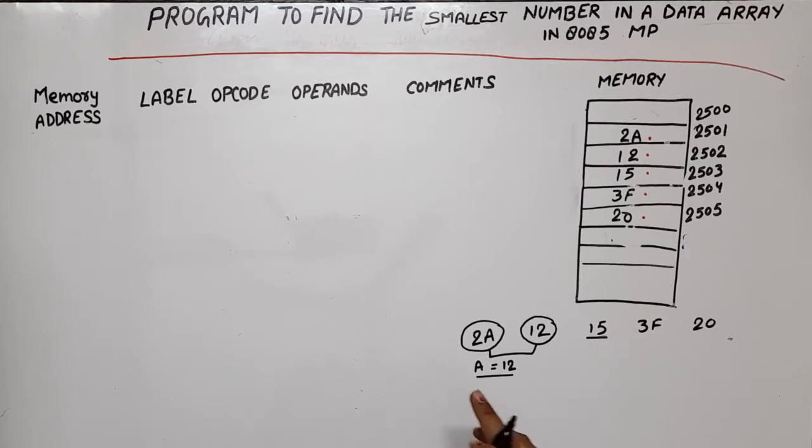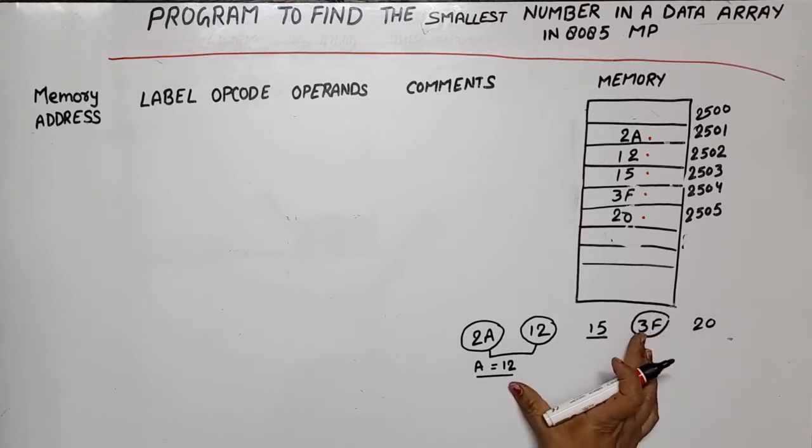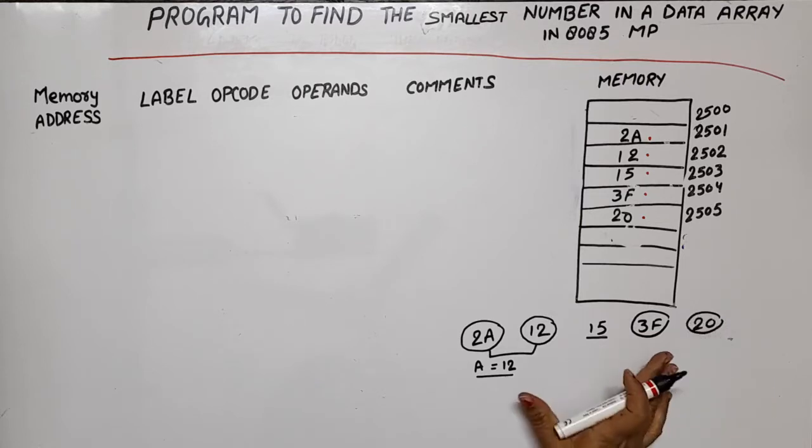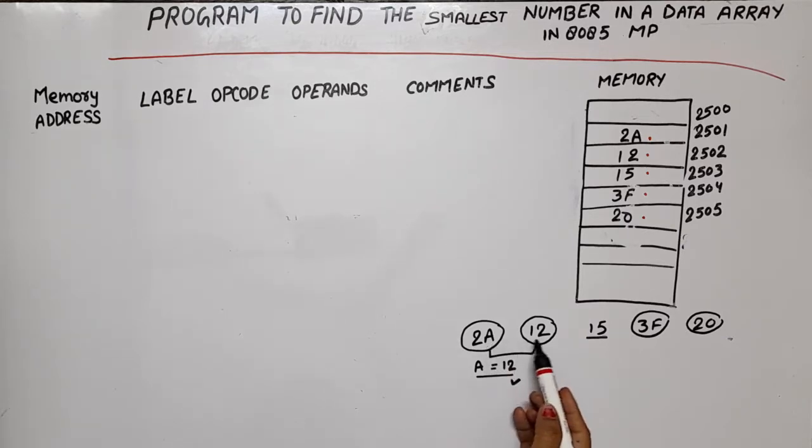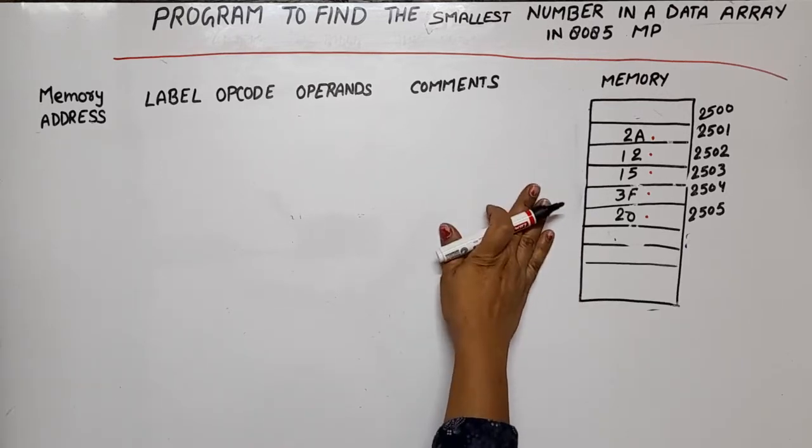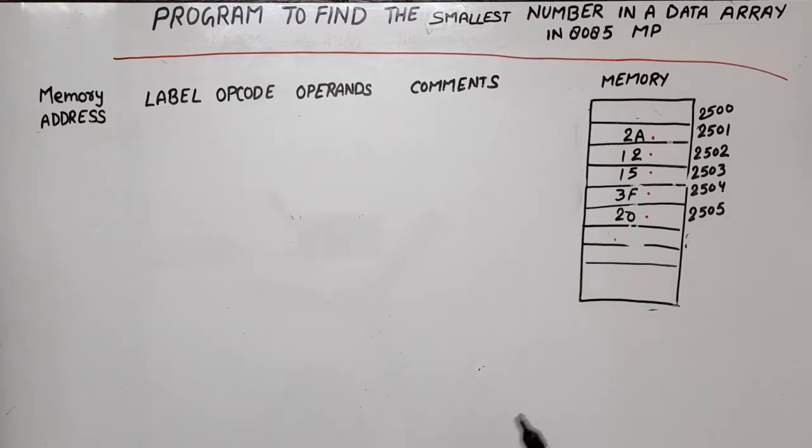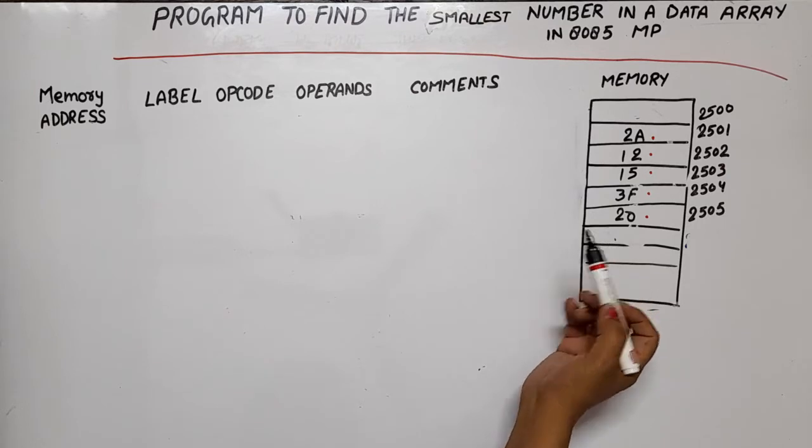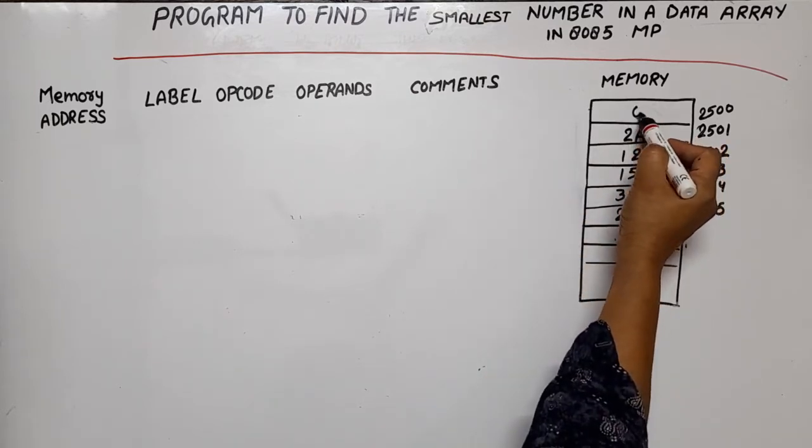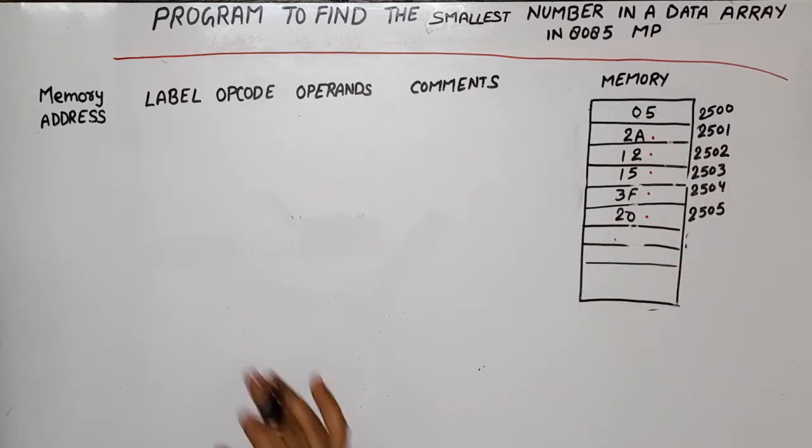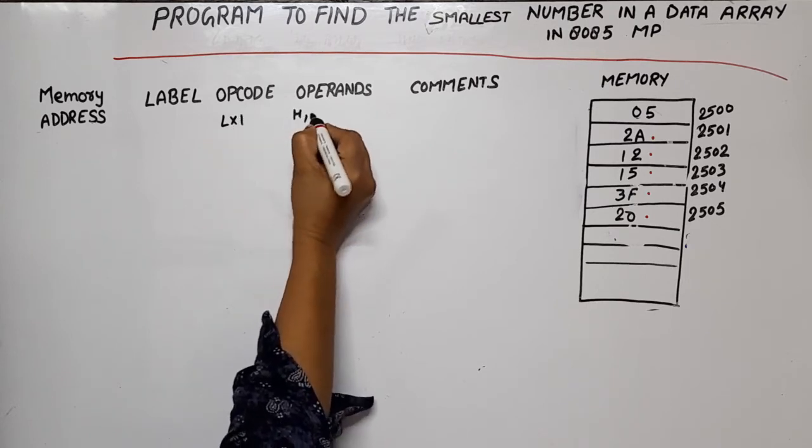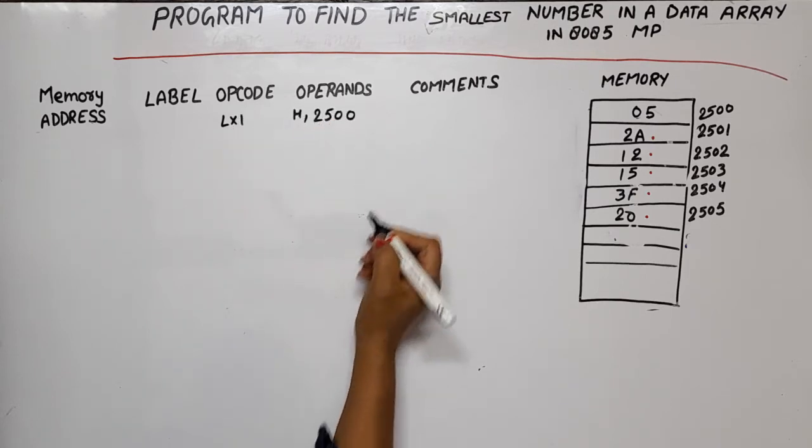We have five bytes total, so our count will be 05. If we had six bytes or ten bytes, the count value would be according to that. These five bytes are stored in locations, and in the previous location, I need to load the count. The comparison of five bytes will happen when count equals 05.